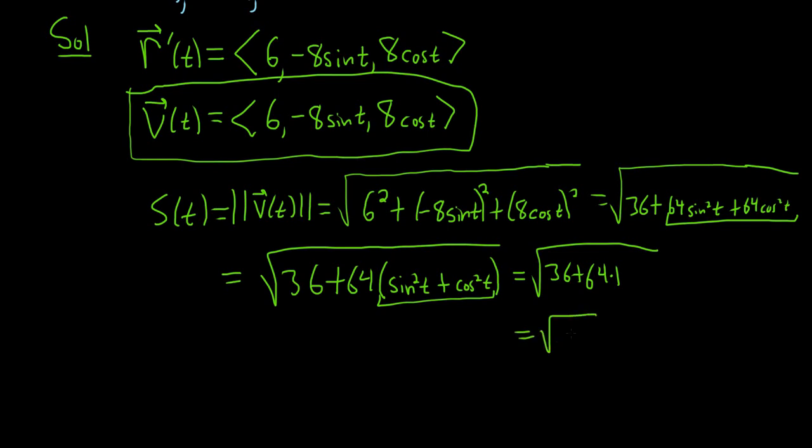So 36 plus 64 is 100, and the square root of 100 is 10. So really nice, the speed is always 10. It's constant. So that is the speed.